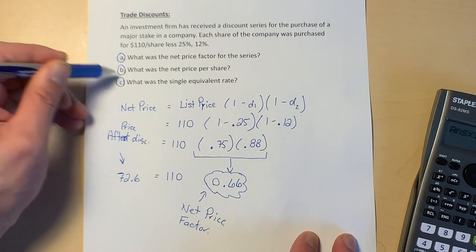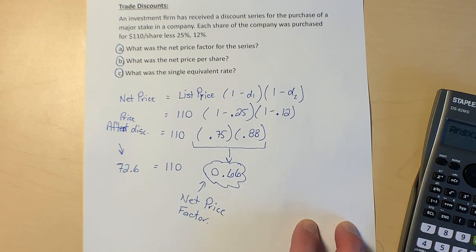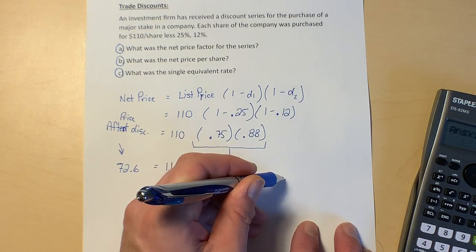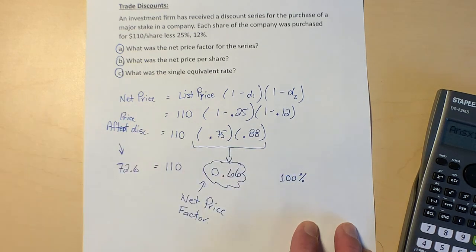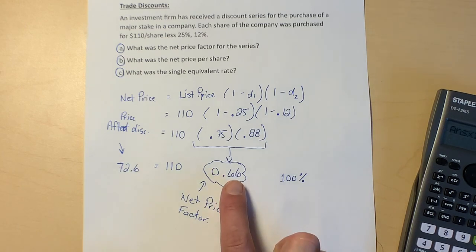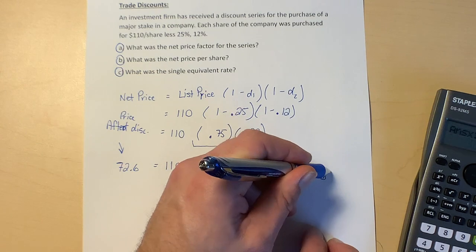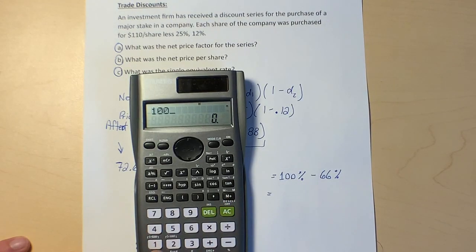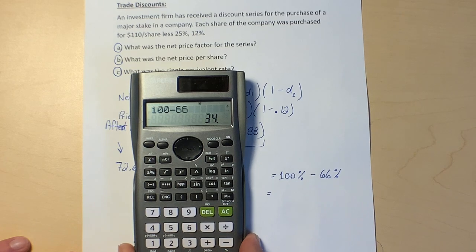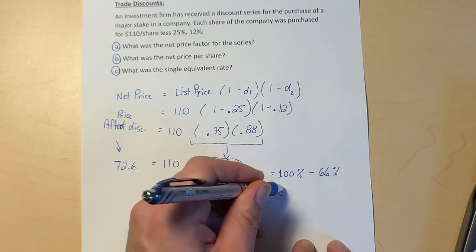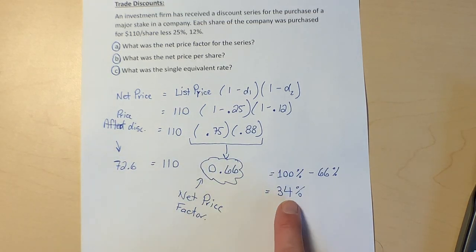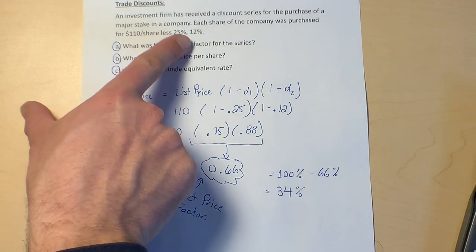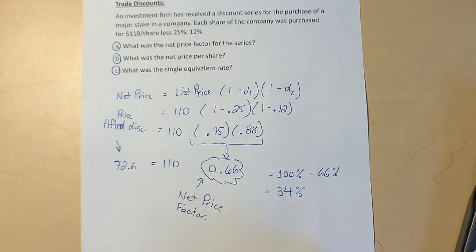And what is the single rate of discount? Well, if we know that we are paying—let's say we start at the regular price, which is 100% or full price. We know that we are only paying 66%. I'm going to subtract those two to find the discount or the difference. So 100 minus 66 gives us 34%—these are different from each other by 34%. That's the amount of the discount. So a 25% discount and then another 12% discount is the same as a 34% discount.